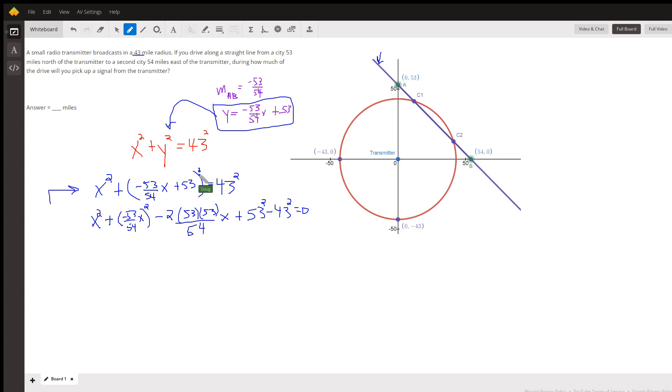So we have to square this binomial, which means square the first term minus twice the product of the two terms. This 2 actually goes into the 54 and leaves 27 in the denominator, plus 53 squared. And if we subtract 43 squared...